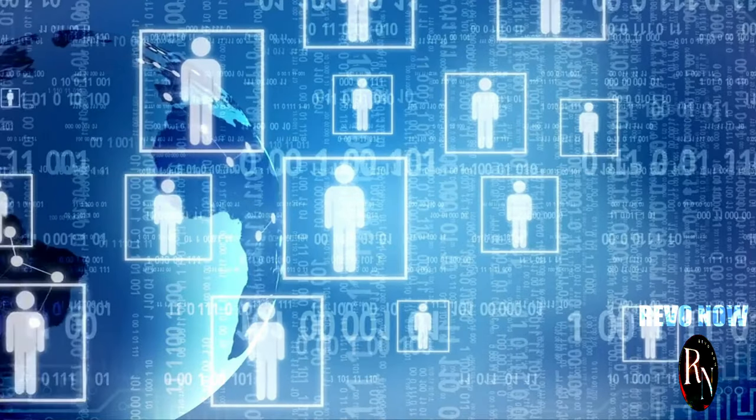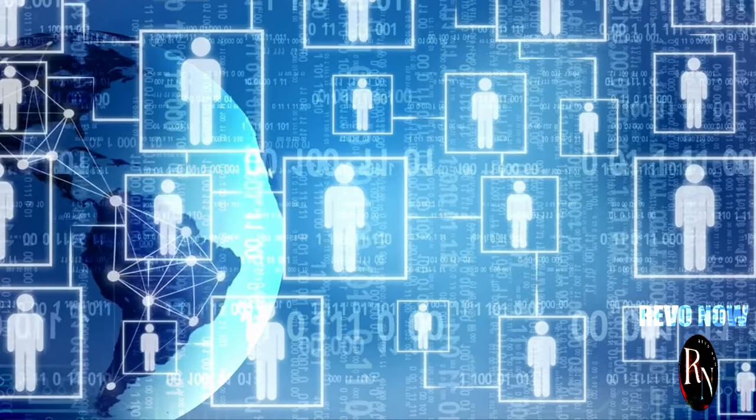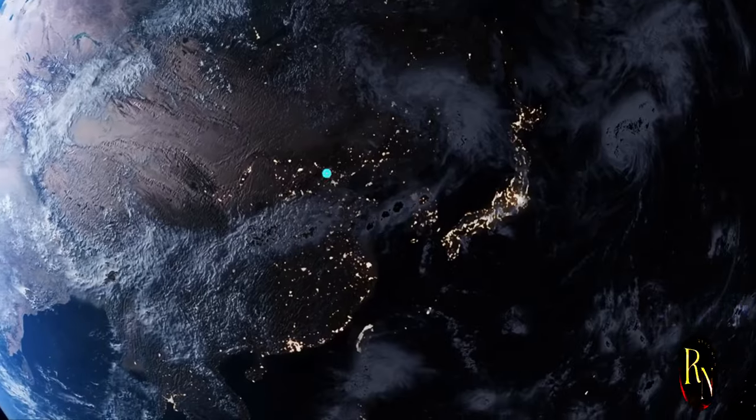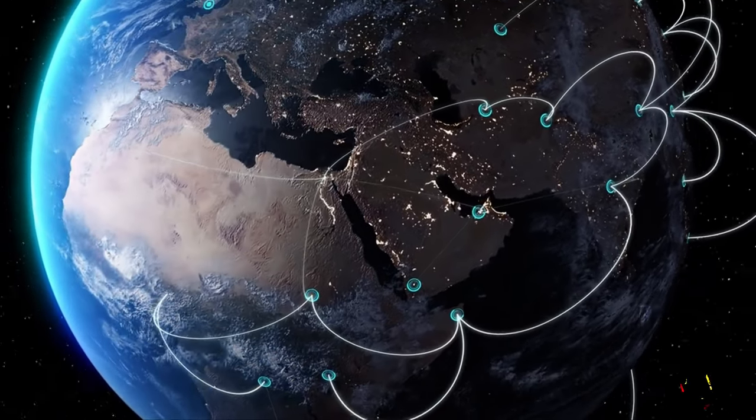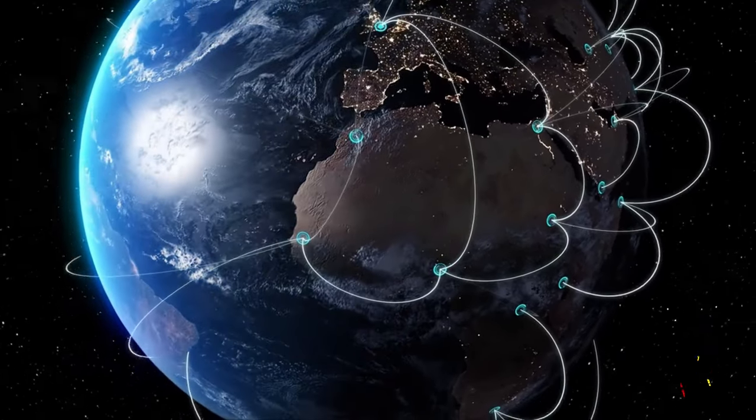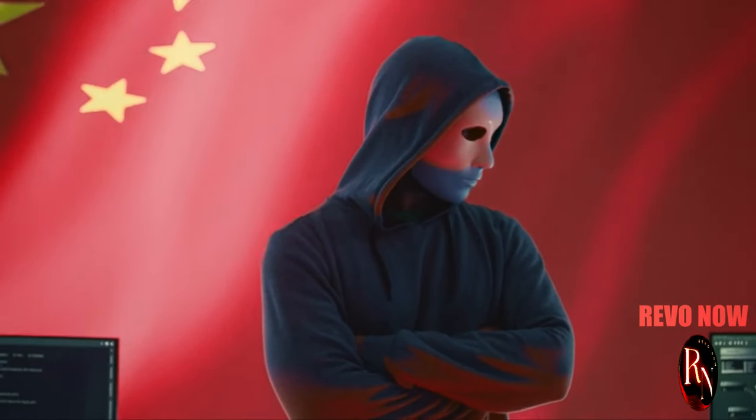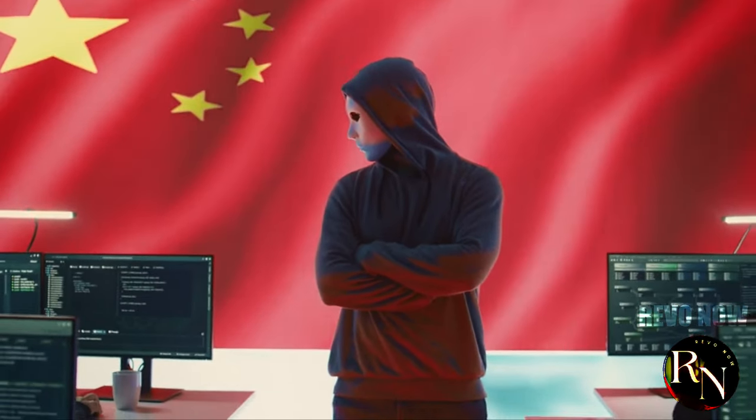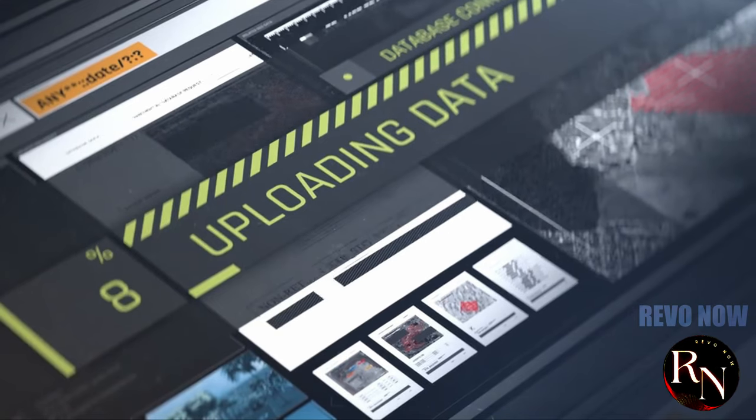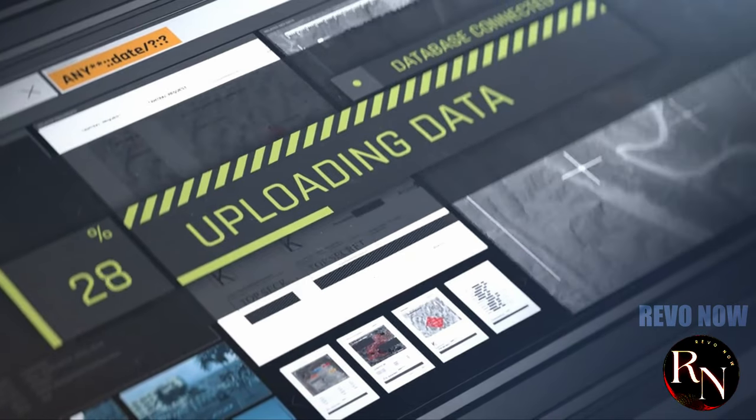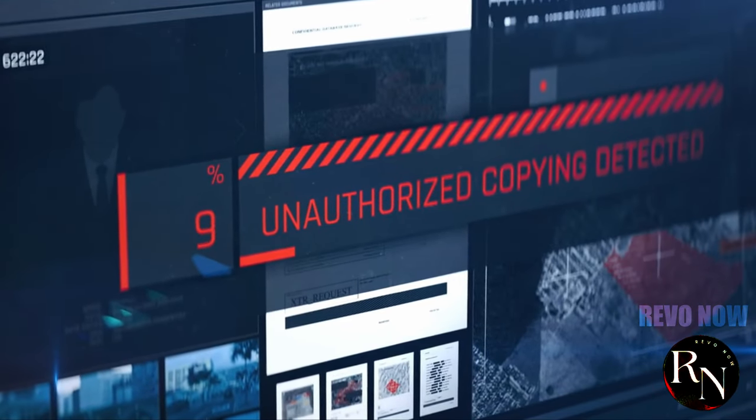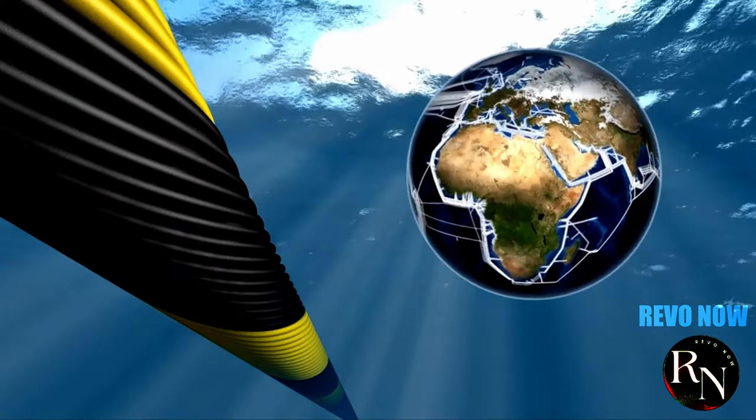China's entry into the fray disrupts this status quo, challenging the long-standing dominance of Western powers. Chinese companies like Huawei and China Telecom have rapidly expanded their reach, laying new cables and establishing partnerships around the world. This expansion is not just about business, it's a strategic move to gain greater control over global communications, raising concerns about cyber security and espionage. The involvement of Chinese companies in global telecommunications has sparked fears of potential backdoors and surveillance.